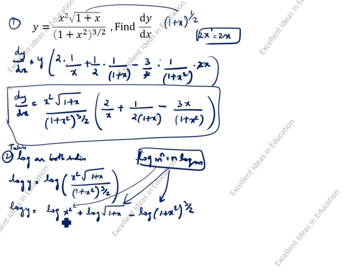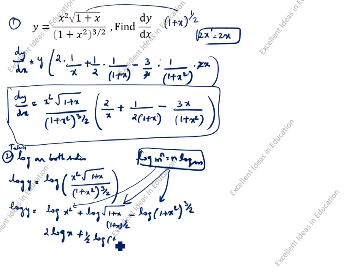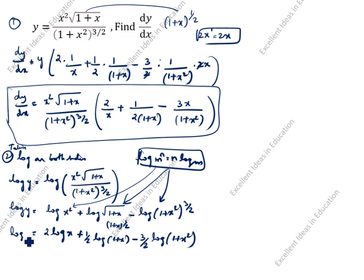Based on this formula we split all three terms. So log y equals 2 log x plus — for the square root of (1 plus x), which is (1 plus x) to the power 1 by 2, we write 1 by 2 log (1 plus x) — minus 3 by 2 log (1 plus x squared).